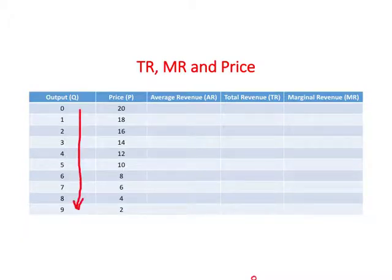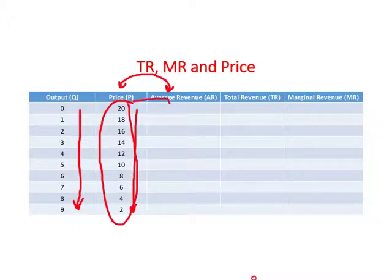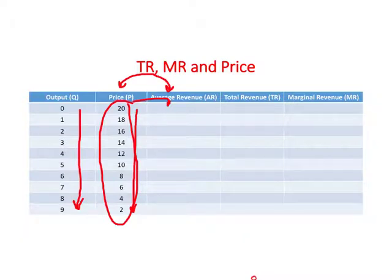As output increases, price continues to decline. This is based on the fact that the product has to be ultimately sold to consumers, and consumers buy more at a lower price and less at a higher price. We already know that price and average revenue are one and the same thing, so whatever numbers we have for price, we can copy them for average revenue. Total revenue is price times quantity, or average revenue times quantity — so 20 times 0 is 0, 18 times 1 is 18, 16 times 2 is 32.